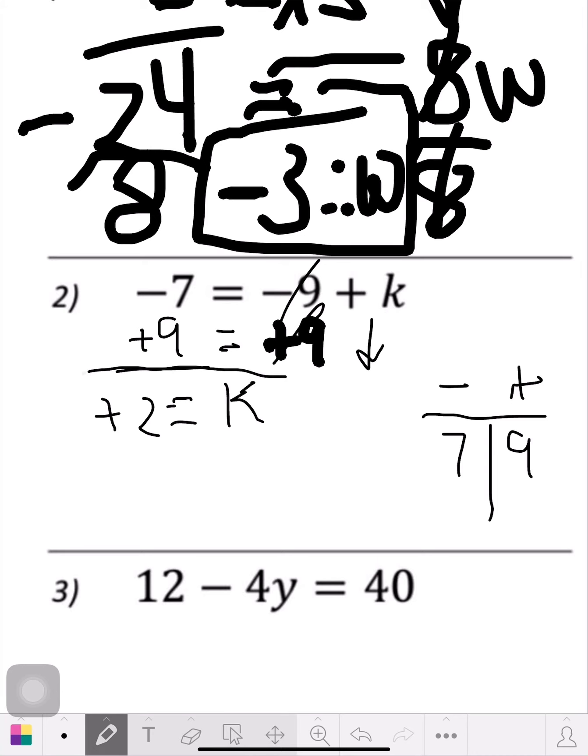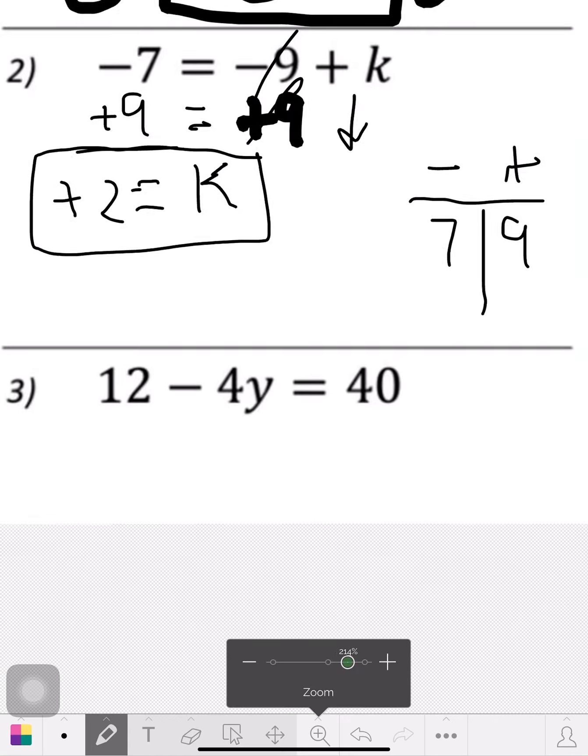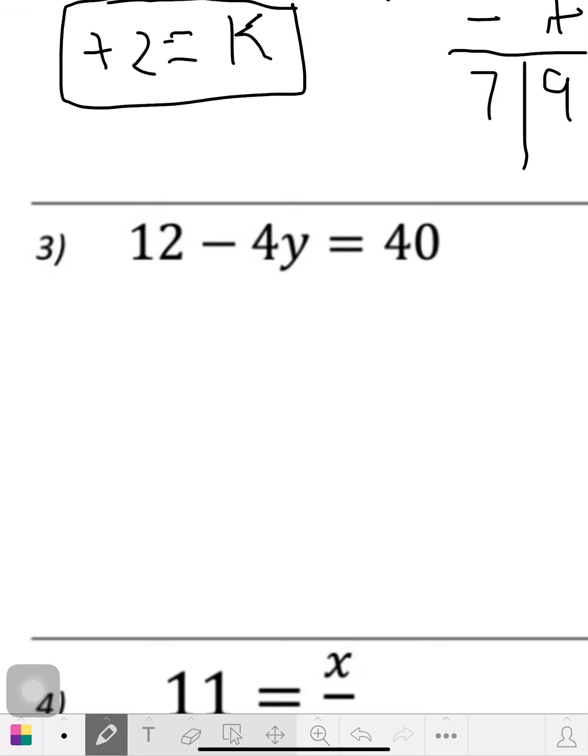That's all there was to that one. Here let's go down to number 3. Got plenty of space here to write. So now the problem we got is 12 minus 4y equals 40. Let's get rid of the 12 first, that's the easiest thing. So if we got a positive we put a negative in there, that's the opposite. If we do to one side we gotta do to the other side.